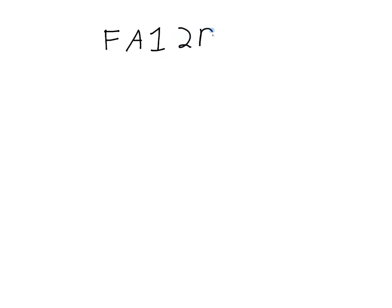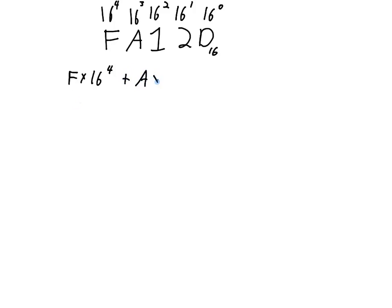Let's do one final conversion from hexadecimal to decimal using a number that mixes letter and numeric forms. FA12D is the base-16 number we want to convert. D is in the 16-to-the-zero column, 2 is in the 16-to-the-first column, 1 is in the 16-squared column, A is in the 16-cubed column, and F is in the 16-to-the-fourth column. So the expression is: F times 16 to the fourth, plus A times 16 cubed, plus 1 times 16 squared, plus 2 times 16 to the first, plus D.